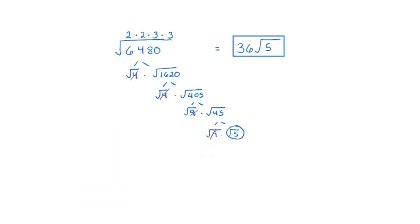If you have to simplify a really large radicand and you're not sure what the largest perfect square is, find any perfect square. Because this is an even number, I would try 4 first. If you go 6480 divided by 4 in your calculator and get a whole number, then 4 is a perfect square that will divide evenly — and it is. Take the square root of 4, which is 2, and put that 2 on top. Now ask: is there another perfect square that will divide evenly into this number? I'll try 4 again, and 4 does divide evenly, leaving me with 405. Take the square root of 4 again, leaving me with another 2.